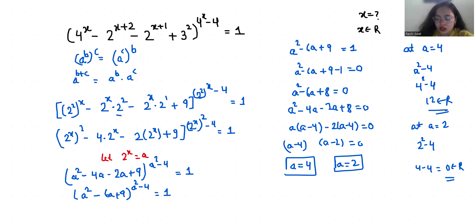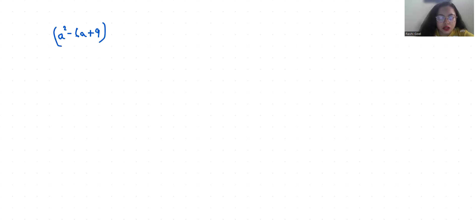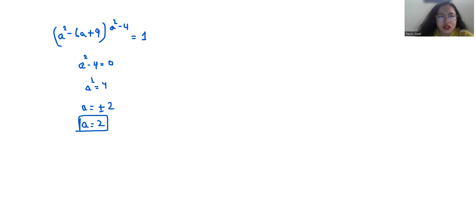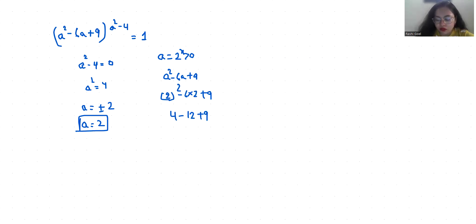For the second case, (a² minus 6a plus 9) raised to the power (a² minus 4) equals 1, when the exponent is 0. So a² minus 4 equals 0, giving a equals plus or minus 2. We reject the negative case because we accept real solutions only, and a equals 2^x must be greater than 0. Putting a equals 2: 2² minus 6 times 2 plus 9 equals 4 minus 12 plus 9 equals 1, which is not equal to zero. So we also accept this case.